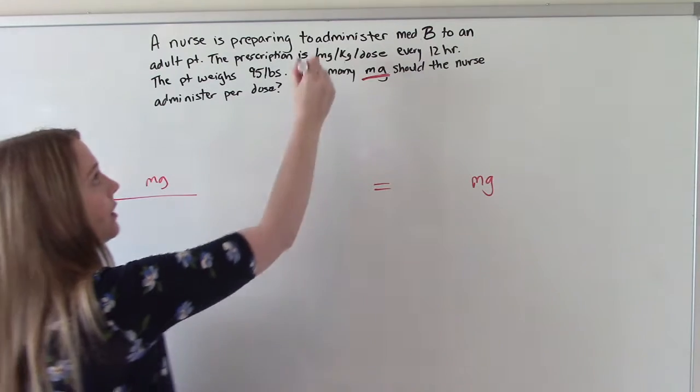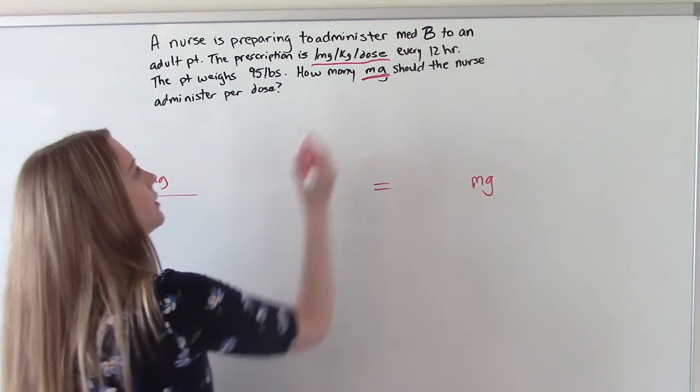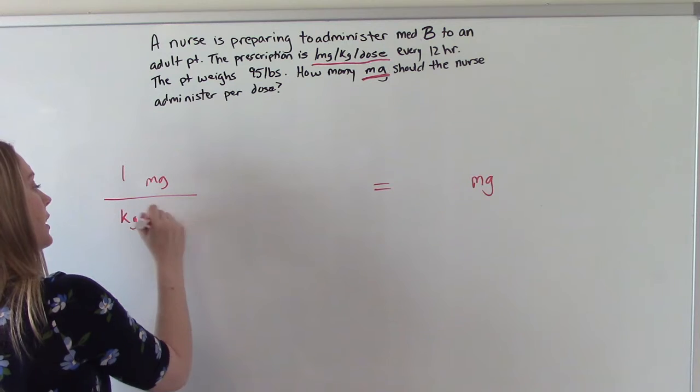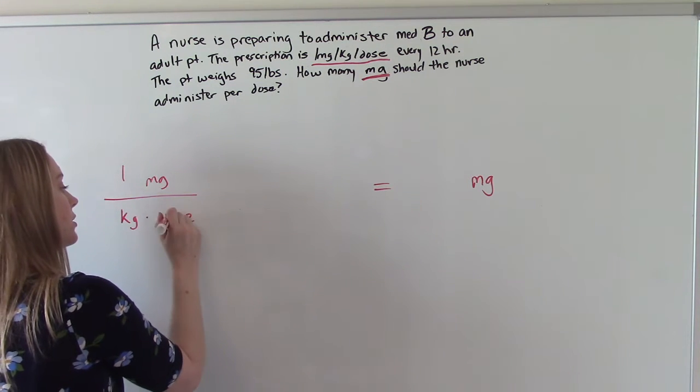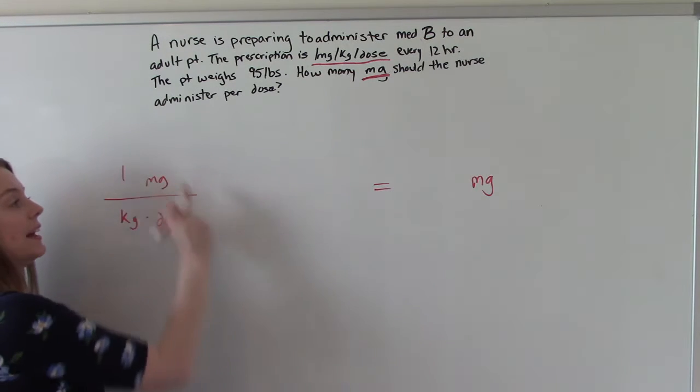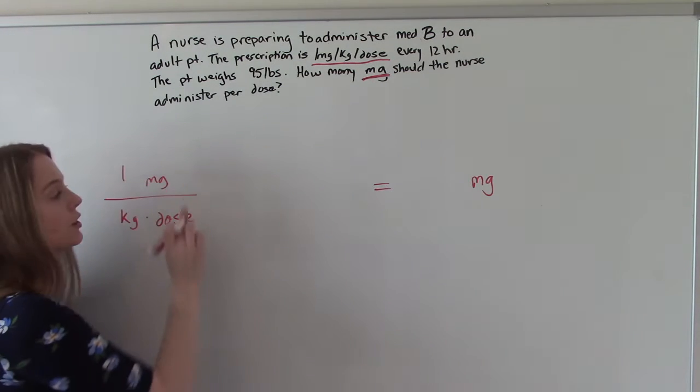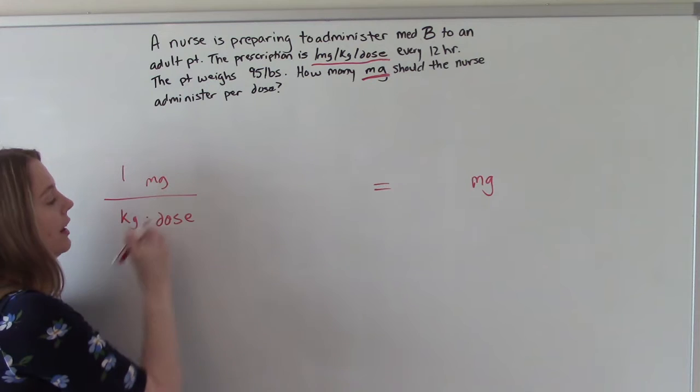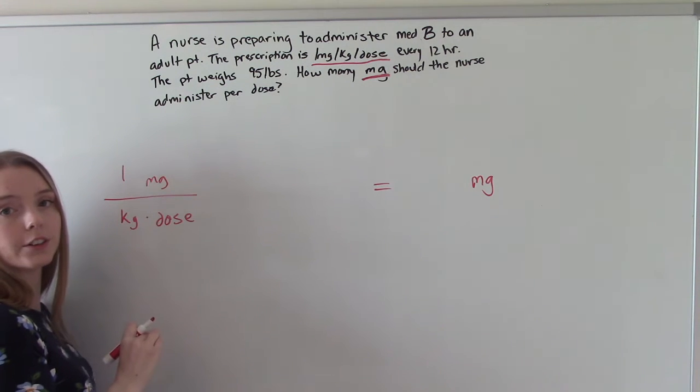Up here. So 1 milligram per kilogram per dose. So if you were curious, how do we write this in equation form? This is what it looks like. So the milligrams is in the numerator and the kilograms per dose is in your denominator.